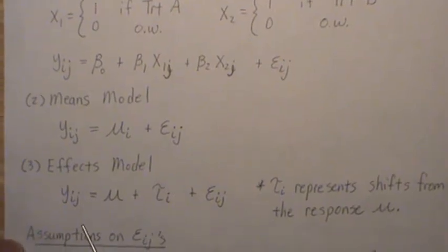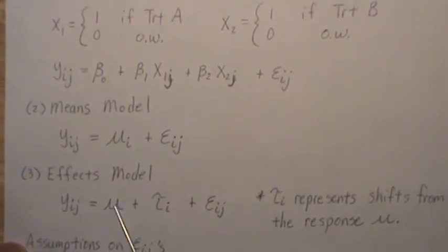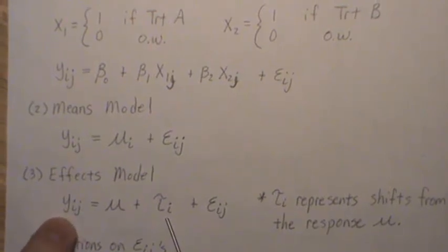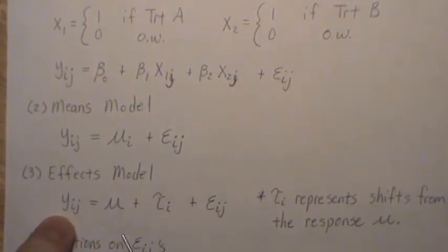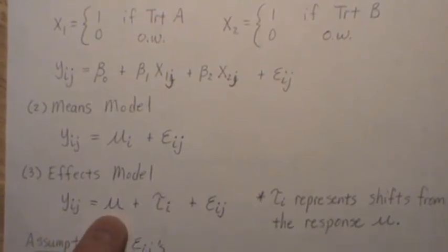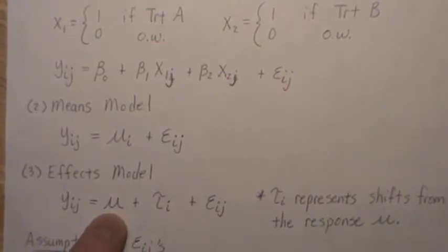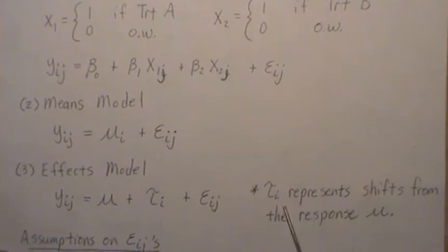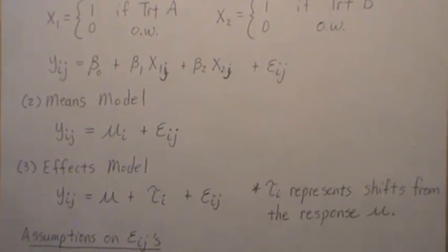The effects model is that we assume there's some overall grand mean of all of our observations, and then there's a treatment effect associated with each index i, each group. And then, of course, it fluctuates within that. Now, since this is the mean, then one of the groups will be less than the mean, the treatment effect. And so these taus will be negative for any group that's less than the grand mean, and they'll be positive for any treatment group that has an effect greater than the grand mean. So really, it represents shifts from the response mu.